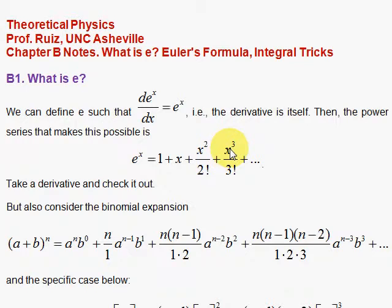If you then look at x cubed and take its derivative, you get 3x squared. The 3 cancels the 3 in the 3 factorial, leaving 2 factorial. x squared over 2 factorial. That's this term. So all the derivatives replace the one before it, and you get the same thing back.